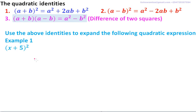So quadratic identities help us to get the expansion directly without working out so many steps.